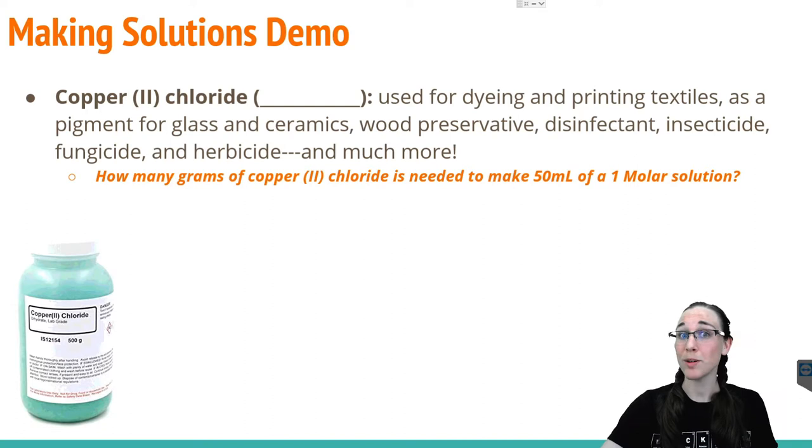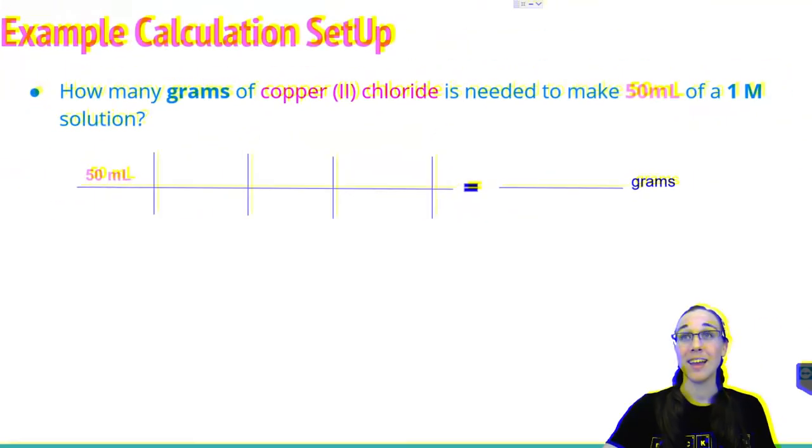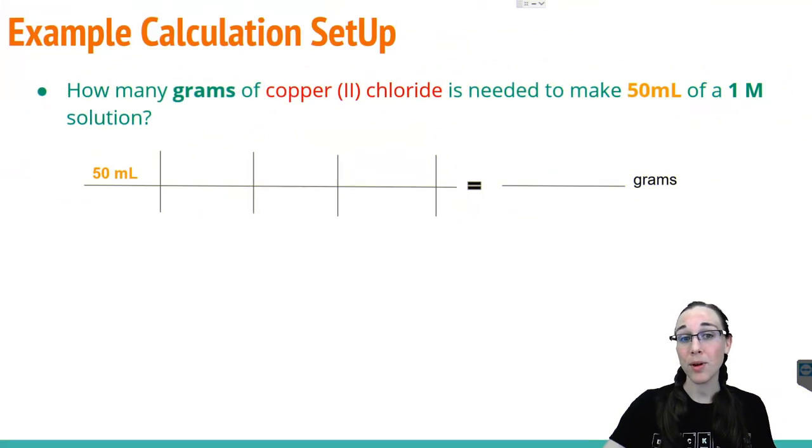First we need to know that copper 2 chloride is Cu with a plus 2 charge. That's what the Roman numerals stand for. And chlorine has a minus 1 charge. From drop and swap way back in the day, we know that our compound would look like this, CuCl2. Now we can figure out how many grams of CuCl2 is needed to make 50 milliliters of a one molar solution.